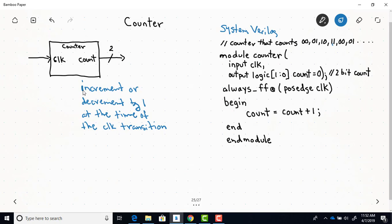And then once it gets to 3, the next rising edge of the clock, it will just start over again and go back to zero and then just keep on going 0, 1, 2, 3, 0, 1, 2, 3.